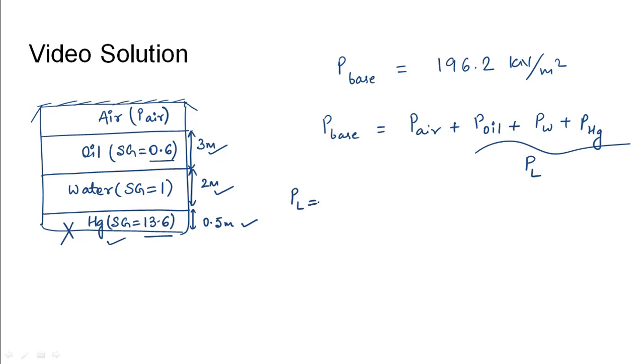PL would be equal to summation of i=1 to 3 of (ρi × g × hi). This can be written as starting with the mercury layer: 13.6 × 1000 would be the density, into g value 9.81, into the depth for mercury that is 0.5. Similarly